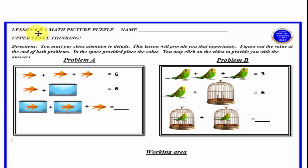Welcome back to lesson six. Here you'll notice we have a goldfish plus a goldfish plus a goldfish, and they equal six. So each one must equal two. Two plus two plus two equals six.